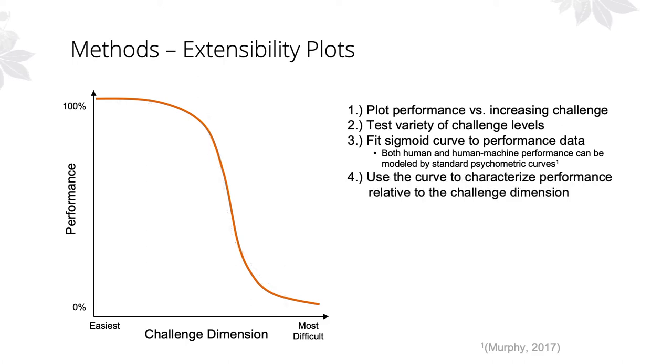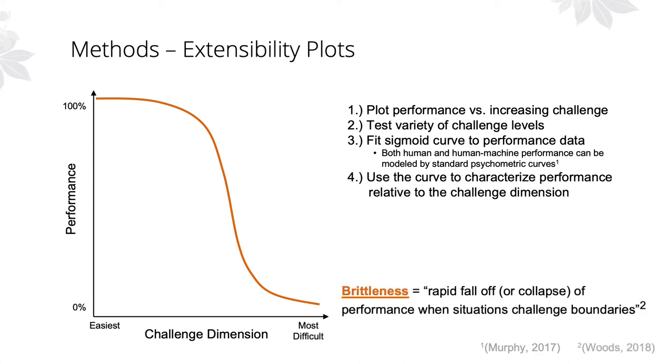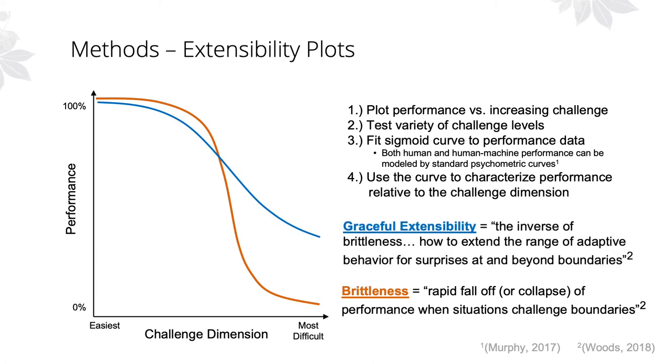From here, we hope to use these models of performance to better understand and evaluate how performance degrades as the system is increasingly challenged. This example curve we might characterize as brittle in the way Woods describes because of the way performance rapidly collapses as challenge increases. On the other hand, a flatter curve where performance more gradually declines, we might say shows signs of graceful extensibility in the way it seems to extend performance past its boundaries.